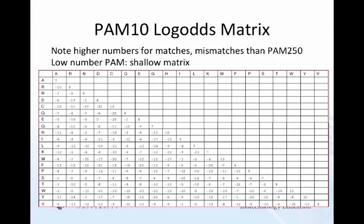This is the PAM10 log odds matrix. The thing you may notice is that there are really high numbers for matches and mismatches — double digits for both positive and negative numbers. This is a shallow matrix which is useful for sequences that are close on the evolutionary scale, whereas high-number PAM matrices are better for more distant relatives. Because these numbers are so spread between positive and negative, it's also good for short sequences that are too short to generate good statistics. Sometimes shallow matrices are used for that purpose.